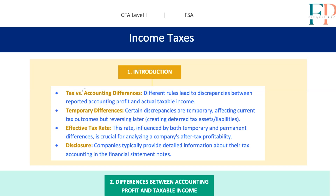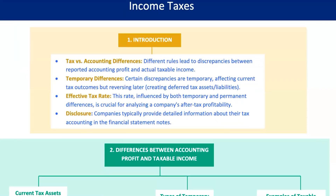All right, let's get this show on the road. First off, let's set the stage. In the financial world, tax laws and financial accounting standards don't always see eye-to-eye. This mismatch leads to differences between what's reported as accounting profit and what's considered taxable income. These differences create variations between what we call accounting profit, or income before taxes, and taxable income.